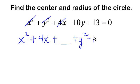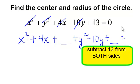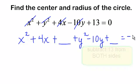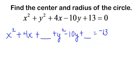minus 10y and I want to make a perfect trinomial for my y's, and that will equal, I'm going to take this 13 to the other side. In other words, I'm going to subtract 13 from both sides so I will have a negative 13. Okay, how do we complete the square?